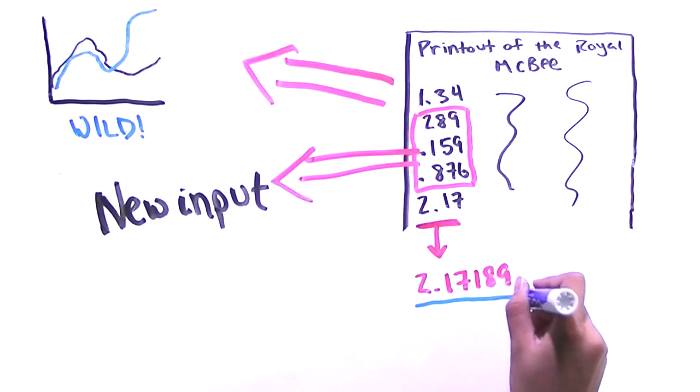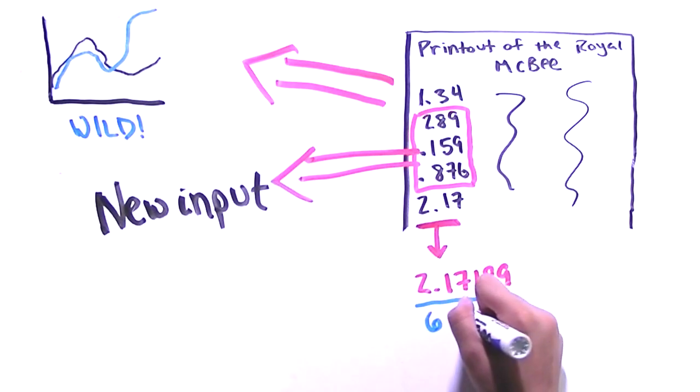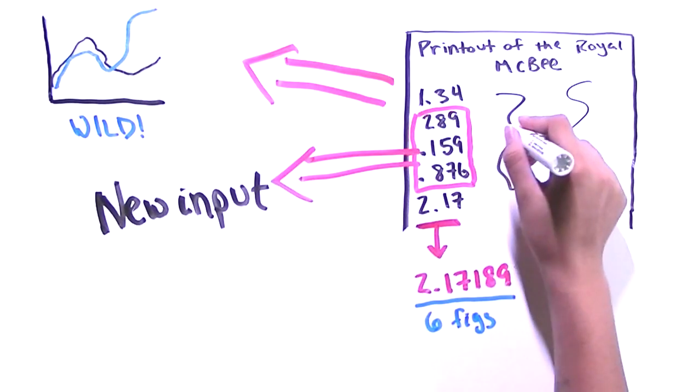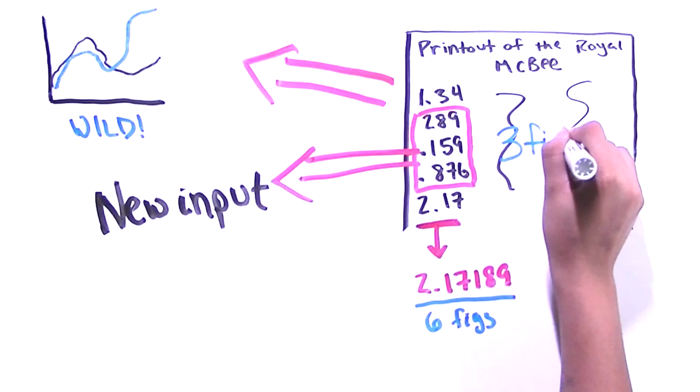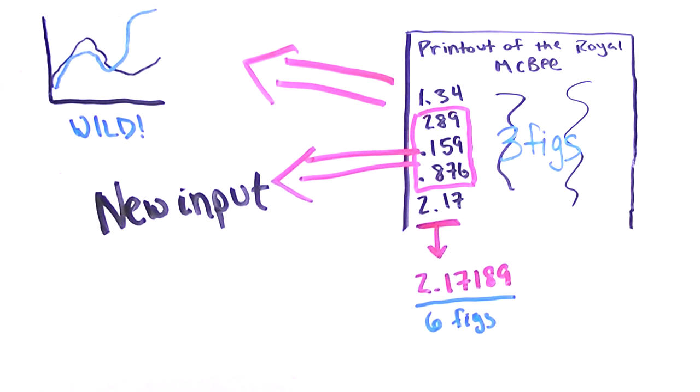When Lorenz input the numbers from a previous day, he was actually entering approximations. The Royal McBeat used numbers with six digits for its calculations. However, on the printouts, only three digits were shown to save space.